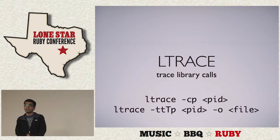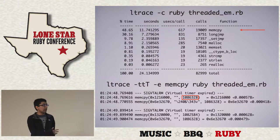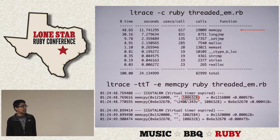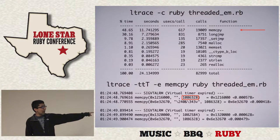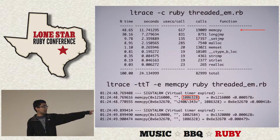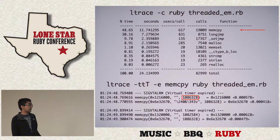The next tool is ltrace. Ltrace is very similar to strace but instead of tracing system calls, it traces library calls. You can run it in summary mode or tracing mode. In the EventMachine threading example from before, ltrace confirms that memcpy was taking a long time — you could actually see the memcpys happening right after each SIGVTALRM. The kernel tells the process it's time to switch threads, and it would do two memcpys copying over a meg back and forth every context switch.